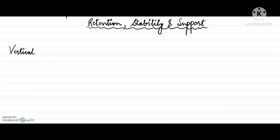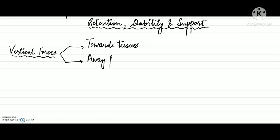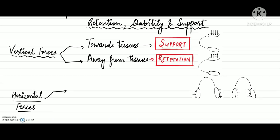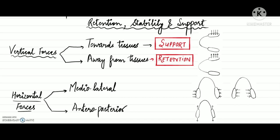You should also understand the difference between retention, stability, and support. There are vertical forces acting either towards or away from the tissues. The quality of the prosthesis that resists forces acting towards the tissues is called support, and the quality that resists forces acting away from the tissues is called retention. The quality that resists movements in the horizontal direction — medial-lateral or anterior-posterior — is called stability. For detailed descriptions, check out the links for my previous videos in the description box below.